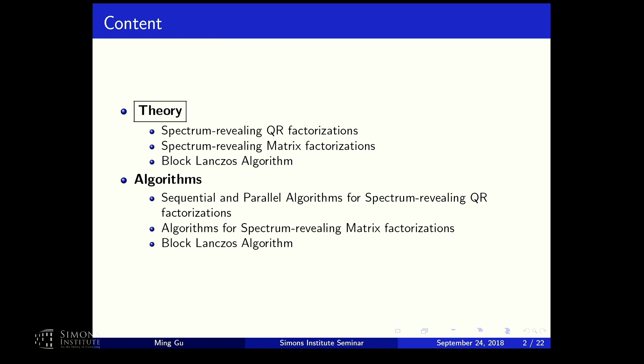This was supposed to be an hour talk, so I'm going to squeeze a lot of stuff, and I'm going to skip a lot of material as well. Yusa already threatened me to cut me off if I go over 30 minutes. So I will mostly focus on the theory part of this. We're going to talk about what's called a spectrum-revealing QR factorization. Traditionally, there's something called a rank-revealing QR factorization. We're going to review that and see what the difference is.